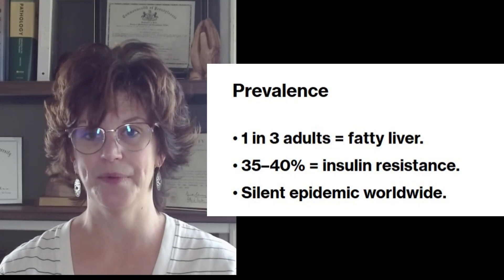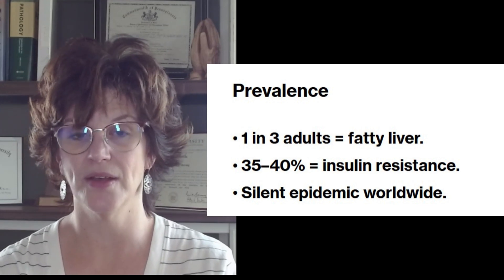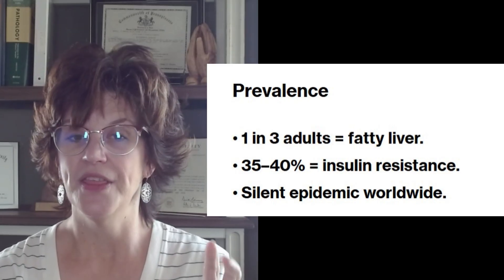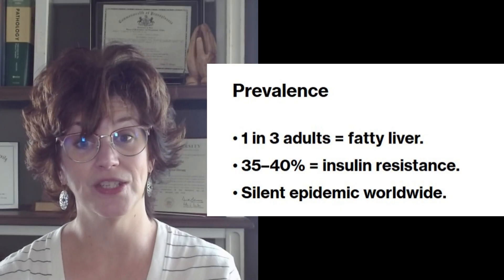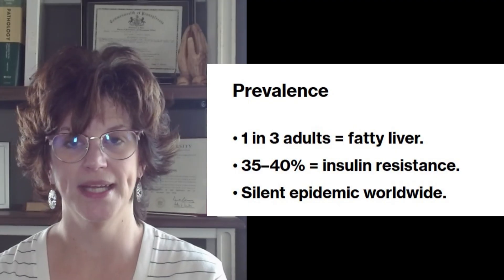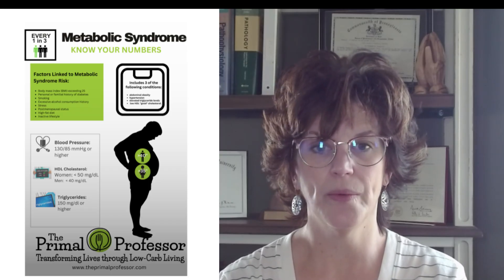Lipotoxicity isn't on a lab report, but the fingerprints are everywhere. One in three U.S. adults have fatty liver disease — one manifestation. Thirty-five to forty percent of adults show insulin resistance — another manifestation. Tens of millions are affected worldwide, often silently. Metabolic syndrome is a diagnosis characterized by high blood pressure, high triglycerides, low HDL, high glucose, and a large waistline. Lipotoxicity is the root cause — that extra fat spilling into places where it doesn't belong is what's driving those numbers.